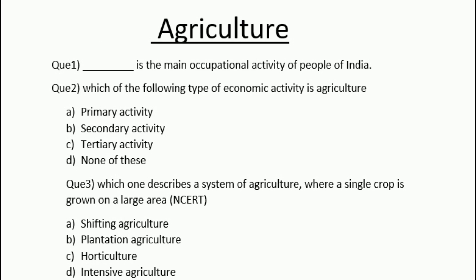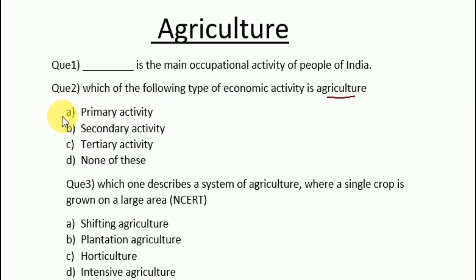Moving to the second question: which of the following types of economic activity is agriculture? The options are: A. Primary activity, B. Secondary activity, C. Tertiary activity, D. None of these. Agriculture is a primary activity, because it is dependent on our natural source of income, and so we put it in the category of primary activity.